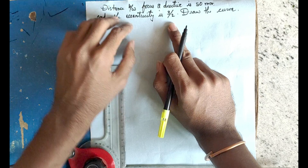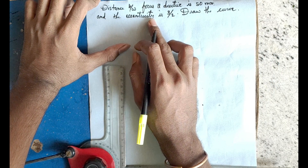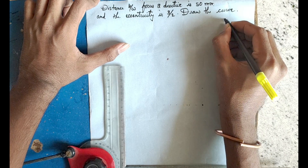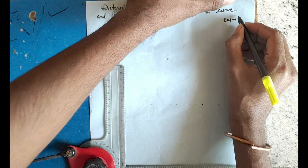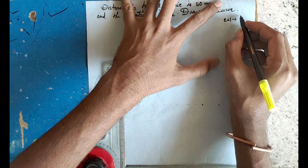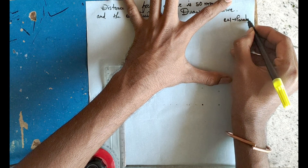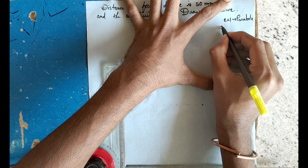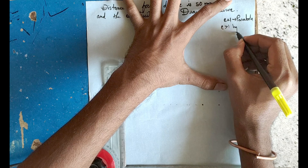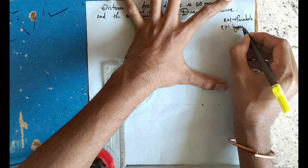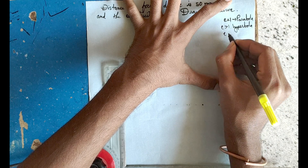We can identify conic sections — parabola, hyperbola, and ellipse — by their eccentricity. If eccentricity is equal to 1, then it is a parabola. If eccentricity is greater than 1, then it is a hyperbola.